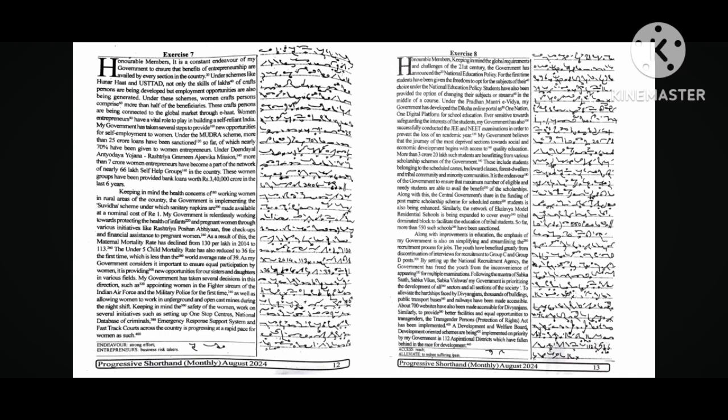These women groups have been provided bank loans worth rupees 3 lakh 40 thousand crore in the last six years. Keeping in mind the health concerns of working women in rural areas, the government is implementing the Suvidha scheme under which sanitary napkins are made available at a nominal cost of rupees one.